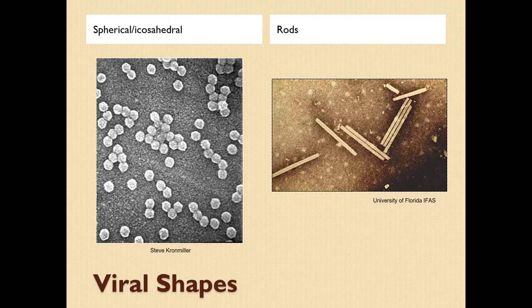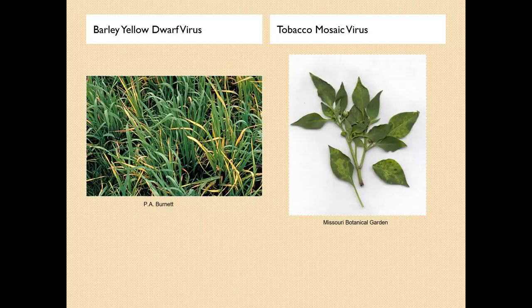There are several different shapes for viruses. Here we have rods, representing tobacco mosaic virus, and then spherical, representing barley yellow dwarf virus — and this is what they look like on the plants. It's important to note that tobacco mosaic virus occurs on many different plants, and I'll talk about that in our next presentation.